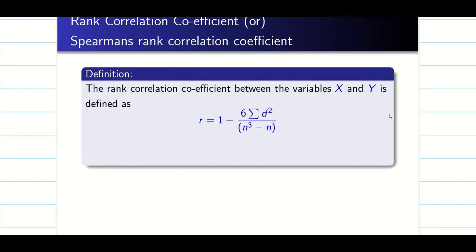So here also we use the same notation. The formula is r = 1 - 6Σd²/(n³ - n).